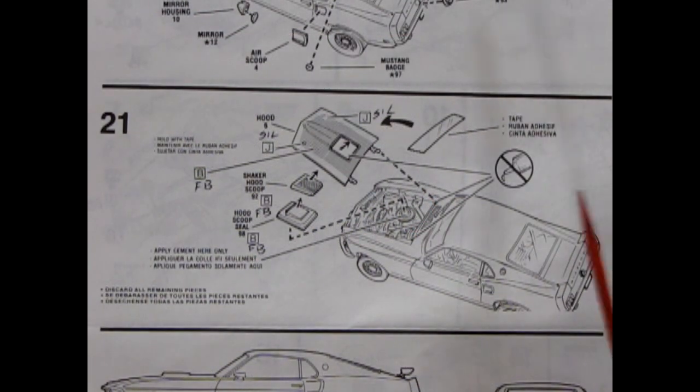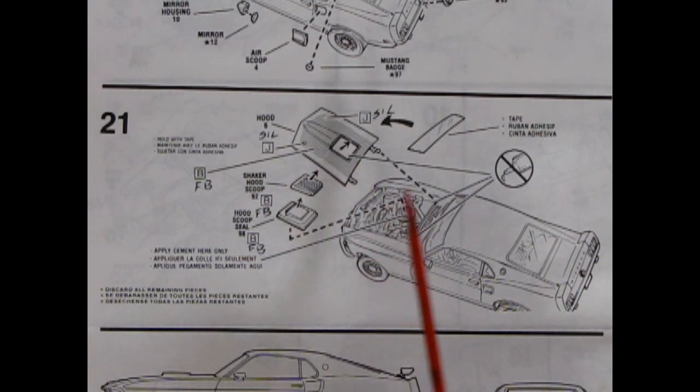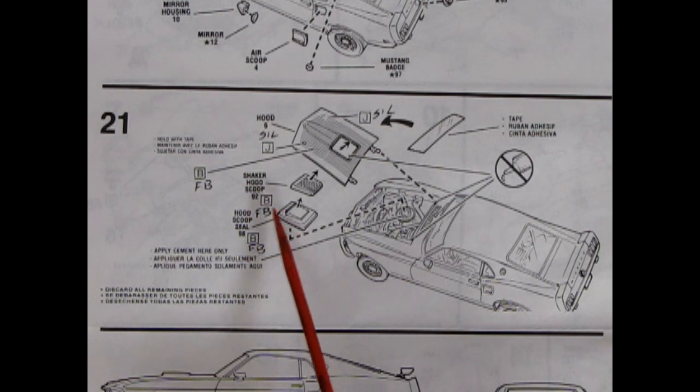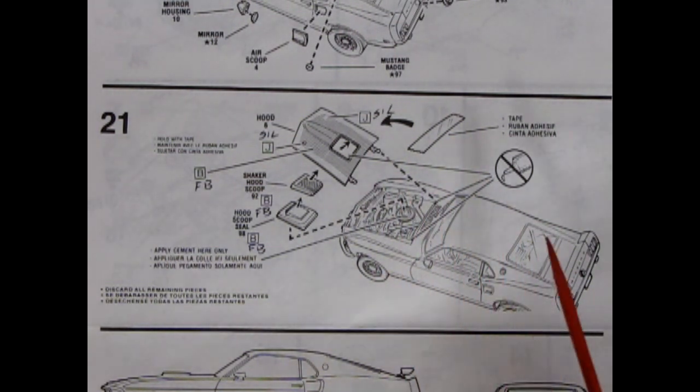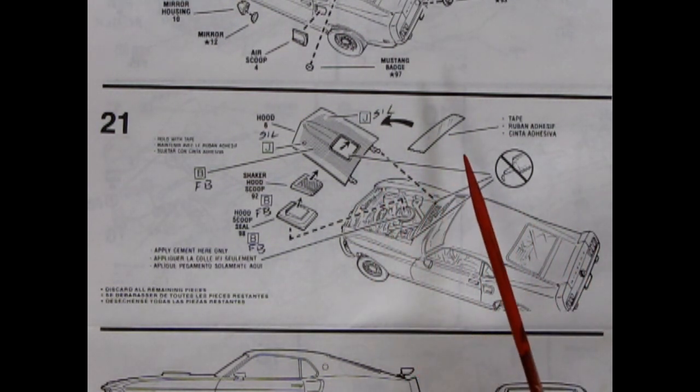Panel twenty one has our hood going on. And then we've got our shaker scoop and the shaker hood seal. This will glue onto the top of your air cleaner. It does say to put a little adhesive tape under here. That's of course if you're going to paint the body as one bit, or maybe even for some alignment. I don't know.